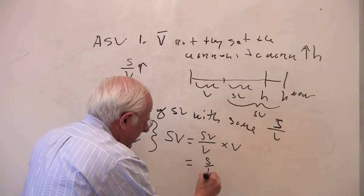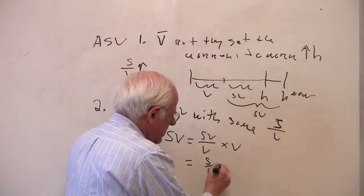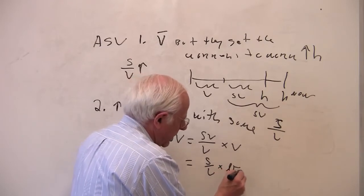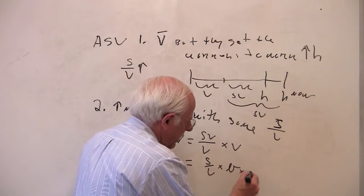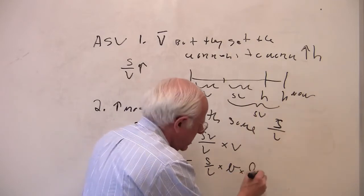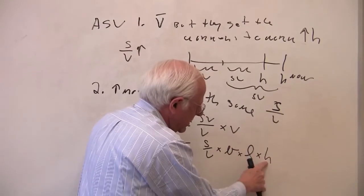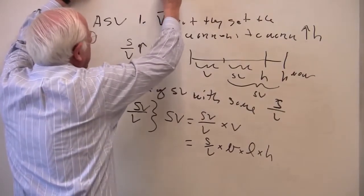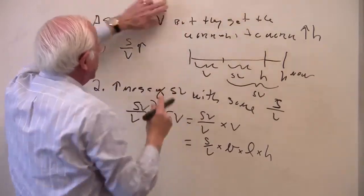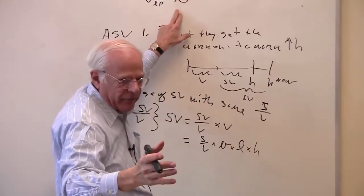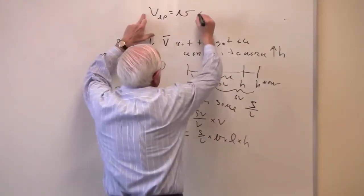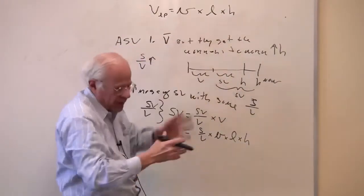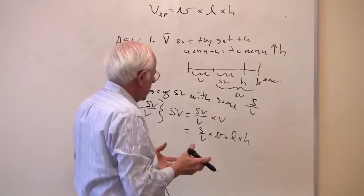So S over V, times the value per worker, times L — the number of workers — times the hours each work. The total value of labor power in capitalism is the value per worker times the number of workers times the hours each work. I've been assuming L equals 1, but it doesn't have to be that. We can have more workers, so we can introduce that.